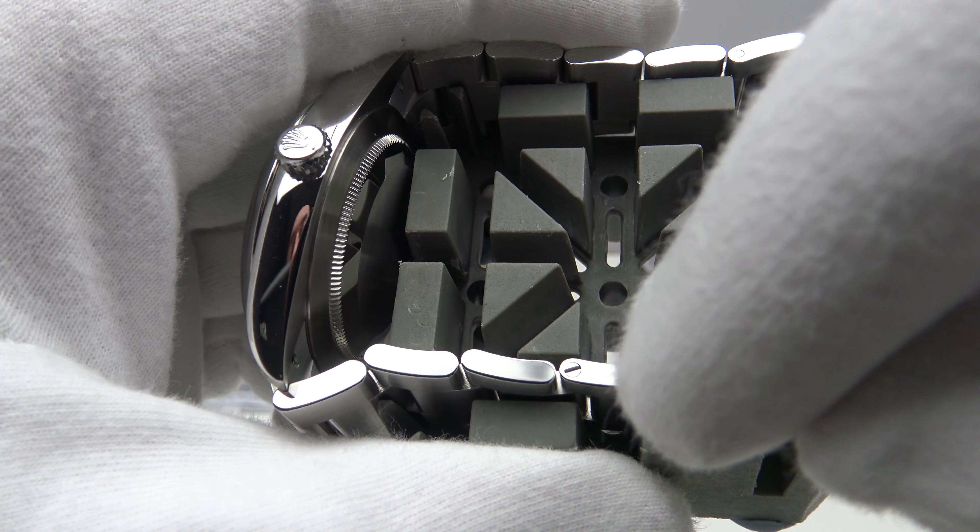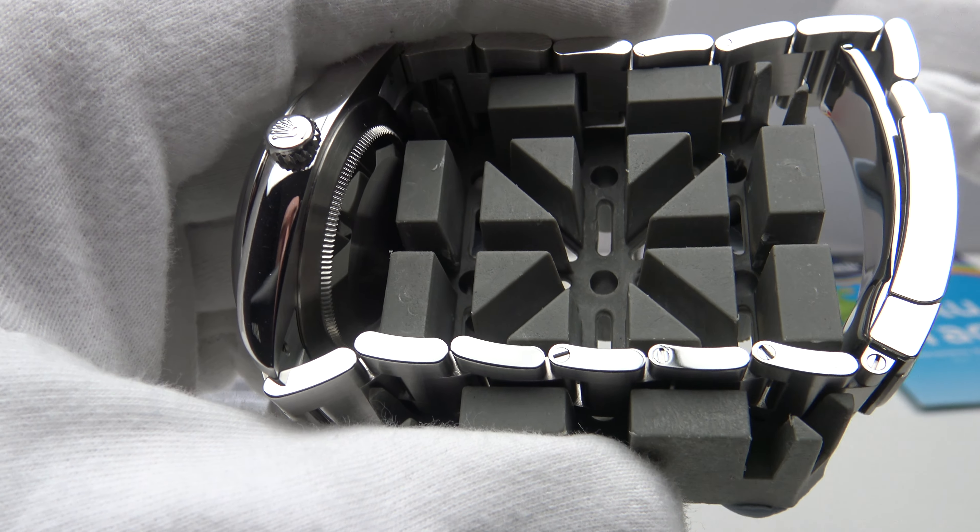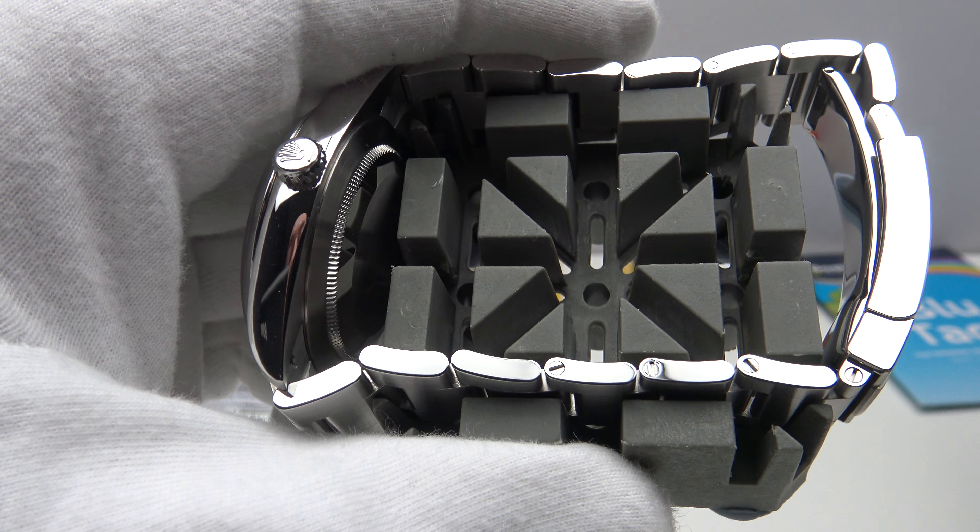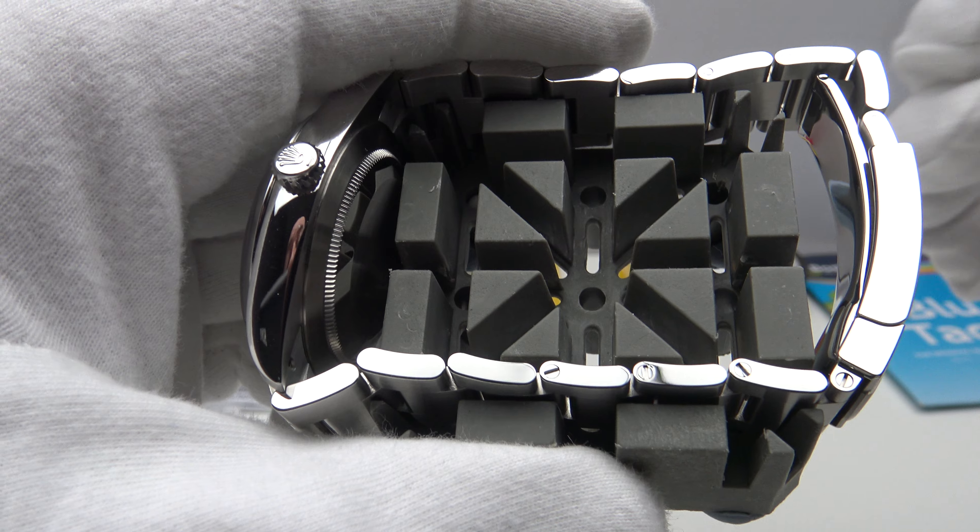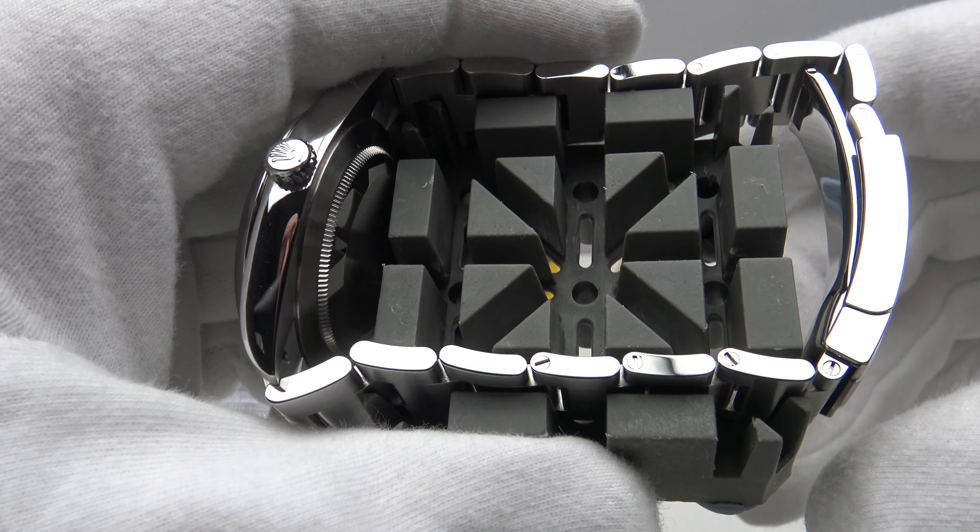They slip, they chew the screw and then they scuff the Oyster bracelet. The Kapton polyimide tape prevents all that as does heating up the thread lock to melt it and break the bond between the thread of the screw and the Oyster link.